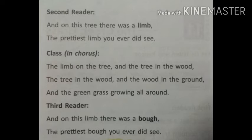Second reader: 'And on this tree there was a limb, the prettiest limb you ever did see.' The second reader was saying that there was a trunk on the tree that was also the prettiest one. Class in chorus: 'The limb on the tree and the tree in the wood, the tree in the wood and the wood in the ground, and the green grass growing all around.' The whole class was singing in praise of a tree standing on the ground in a jungle, with green grass around it.